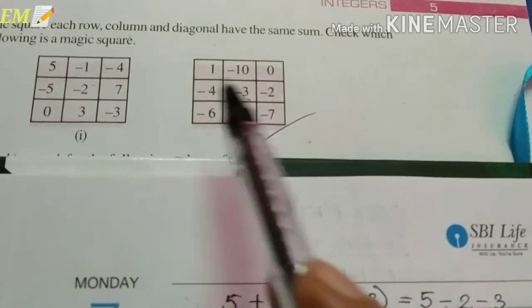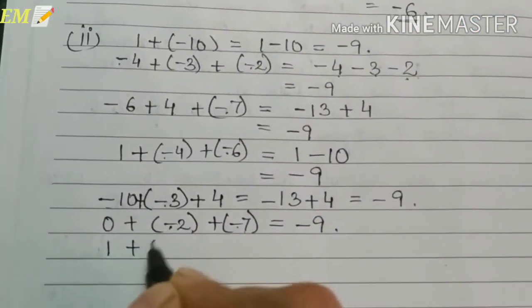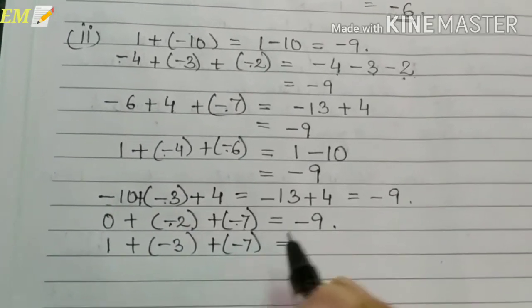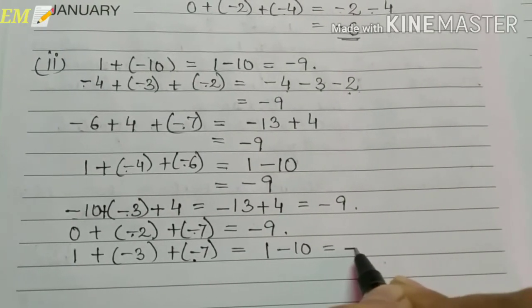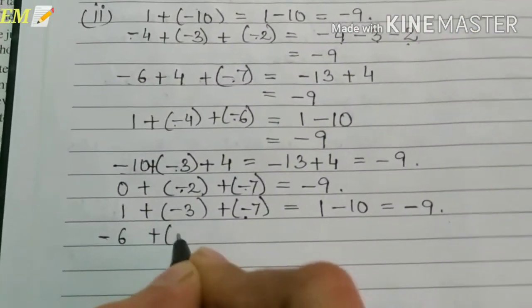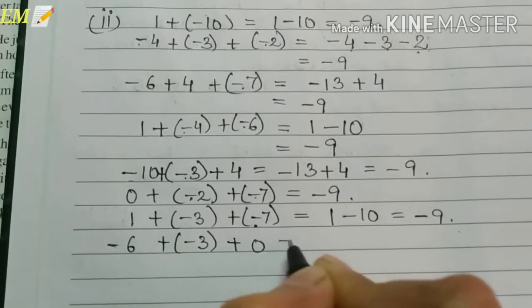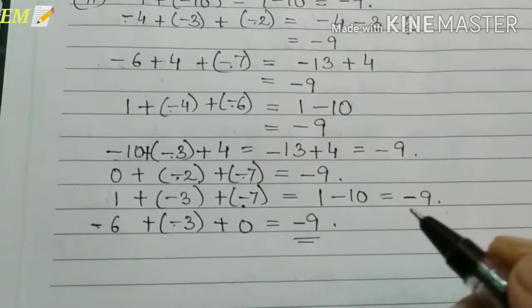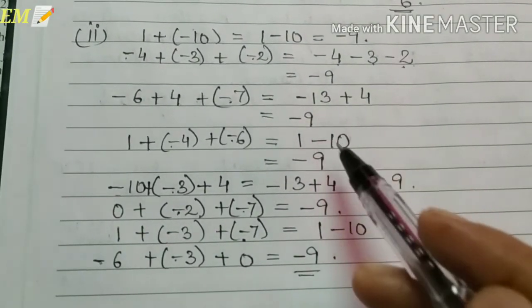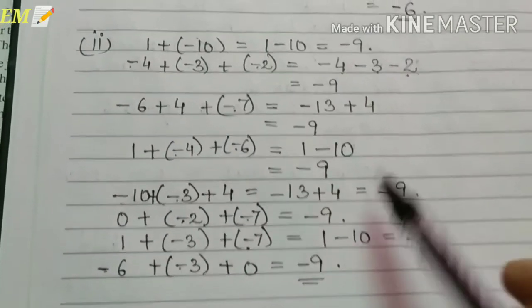Two diagonals: 1 plus (-3) plus (-7), minus minus plus, so 1 minus 10 equals minus 9. And last diagonal: (-6) plus (-3) plus 0, minus minus plus so minus 6 minus 3 gives minus 9. Here we get minus 9 as the sum for everything, so the second one is the magic square.